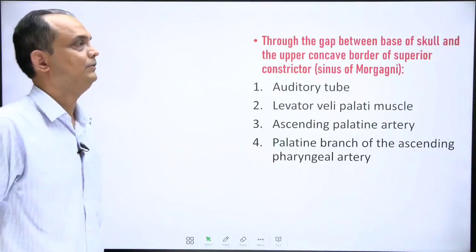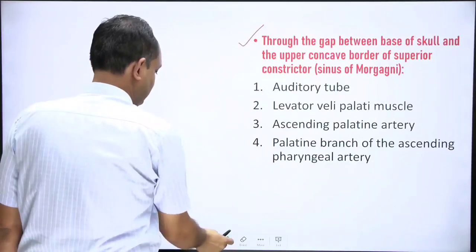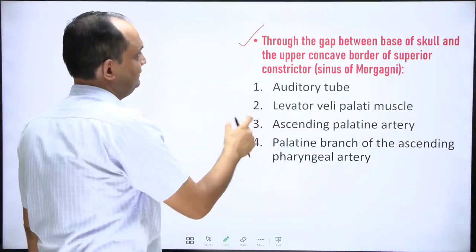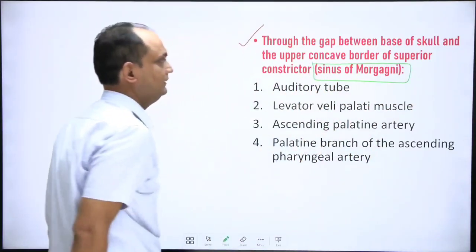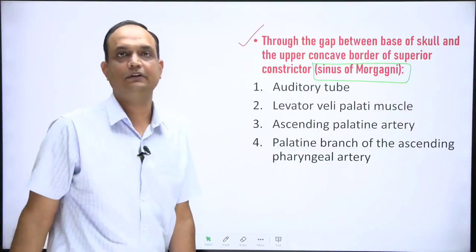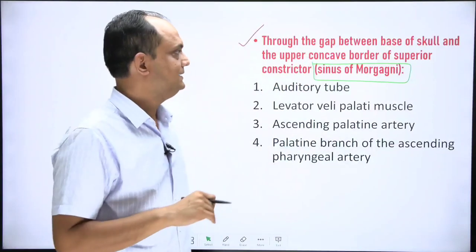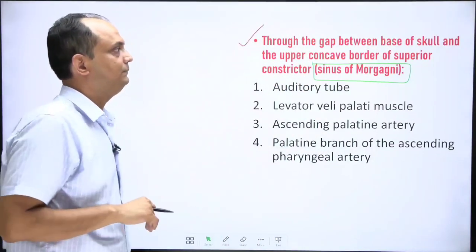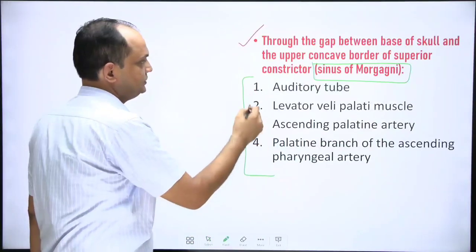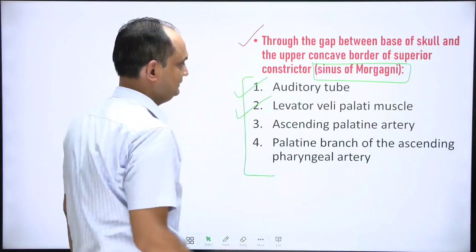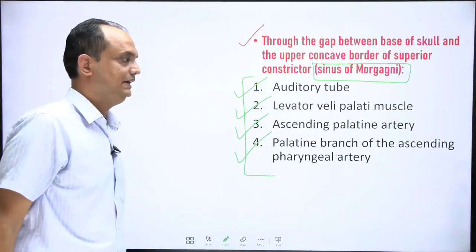What are the names of these structures? This is the most important question for exam purposes. What are the contents or structures passing through the sinus of Morgagni? The sinus of Morgagni is a space between the superior part of the superior constrictor and the base of skull, and through it pass four structures: the auditory tube, the levator veli palatini muscle, the ascending palatine artery, and the palatine branch of the ascending pharyngeal artery.